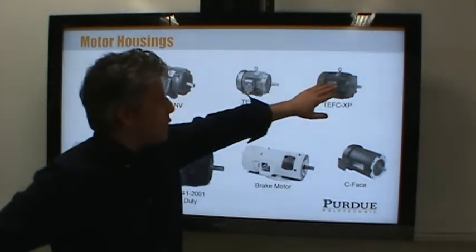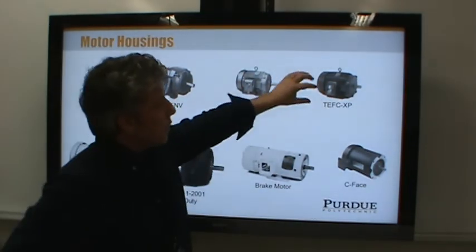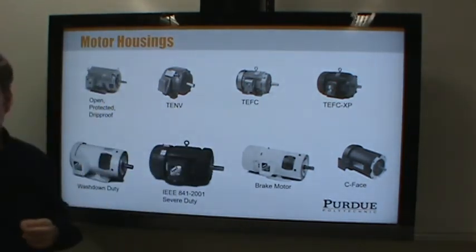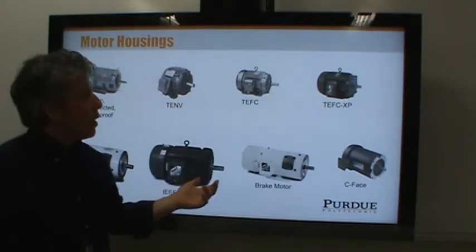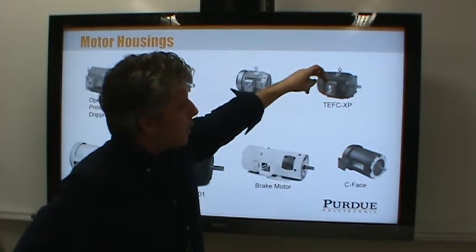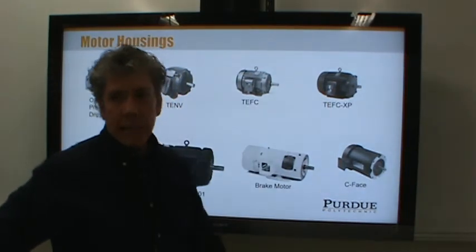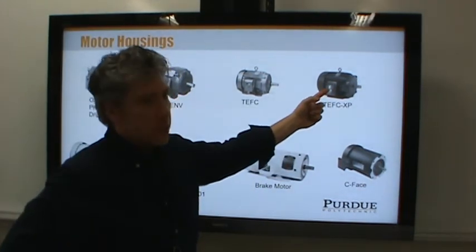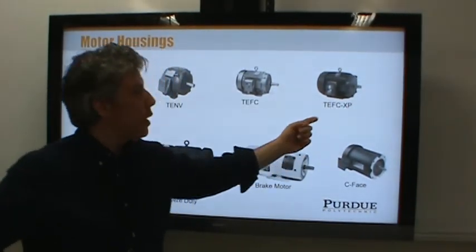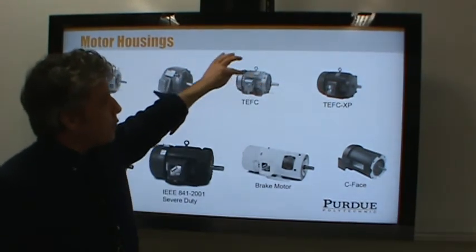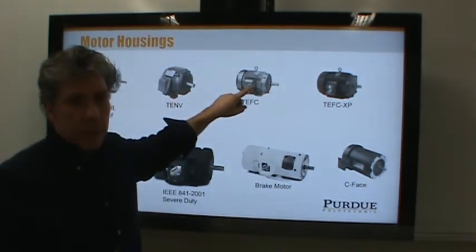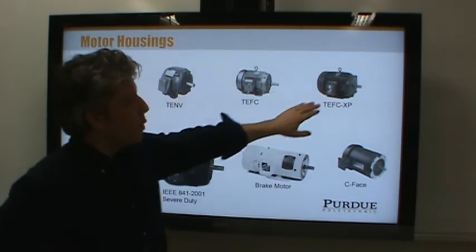The big difference between TEFC and explosion-proof motors is the sealing. Notice the junction boxes on the side — that's where you connect the wires. The explosion-proof motor has very good sealing around the housing so that gases can't pass through and any sparks inside cannot contact an explosive atmosphere. A standard TEFC won't have sparks from the windings since it's fully enclosed, but could spark at the electrical connections.